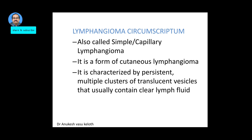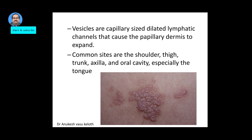Lymphangioma circumscriptum is also known as simple lymphangioma or capillary lymphangioma. It is a form of cutaneous lymphangioma characterized by persistent multiple clusters of small translucent vesicles that usually contain clear lymph fluid. These vesicles represent capillary-sized dilated lymphatic channels that cause the papillary dermis to expand. Common sites are the shoulder, thigh, trunk, axilla, and oral cavity, especially the tongue.